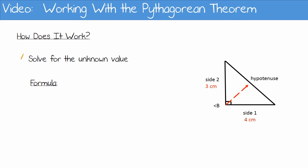You know that the hypotenuse squared is side 1 squared, which is 4 squared, plus side 2 squared, which is 3 squared. And 4 squared is 16, 3 squared is 9, 16 plus 9 is 25, so the hypotenuse would be the square root of 25, which is 5.